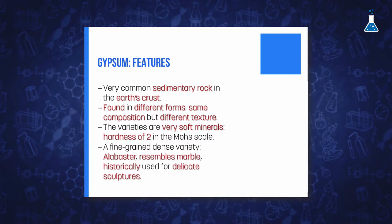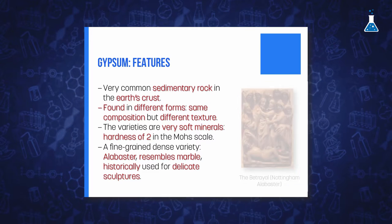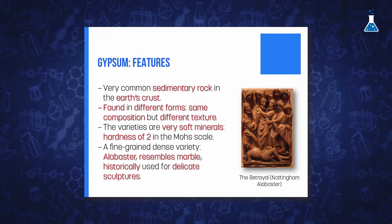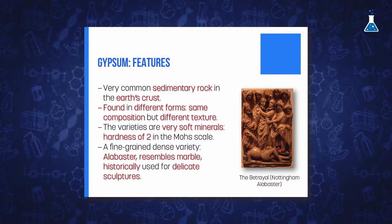A fine-grained dense variety of gypsum is alabaster, which in appearance resembles marble and has been historically used for delicate sculptures. Occasionally, people confuse the natural mineral gypsum with the hemihydrate product that is usually employed as a building material.